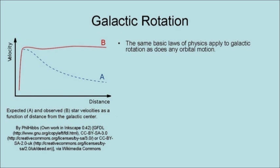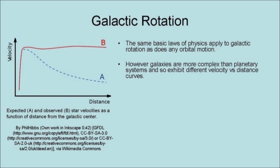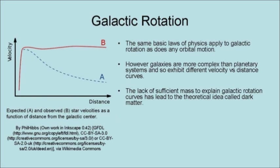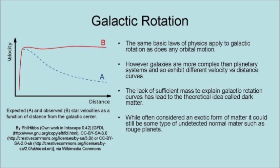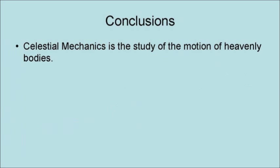The same basic laws of physics applied to galactic rotation as does any other orbital motion. However, galaxies are more complex than planetary systems and so exhibit different velocity versus distance curves. The lack of sufficient mass to explain galactic rotation curves has led to the theoretical idea called dark matter. While often considered an exotic form of matter, it could still be some type of undetected normal matter such as rogue planets.